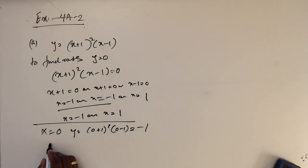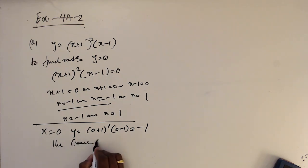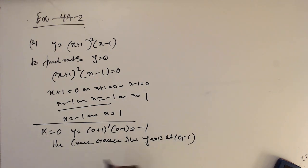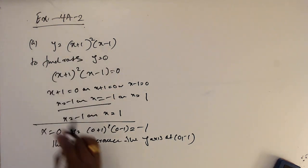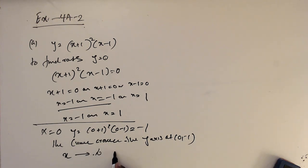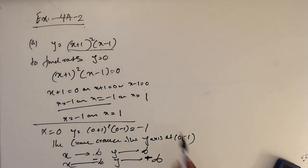So the curve crosses the y-axis at (0, minus 1). We can see that the leading coefficient is positive, so when x goes to positive infinity y goes to positive infinity, and when x goes to negative infinity y goes to negative infinity, because the coefficient of x cubed is positive.